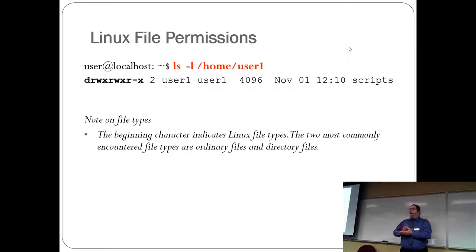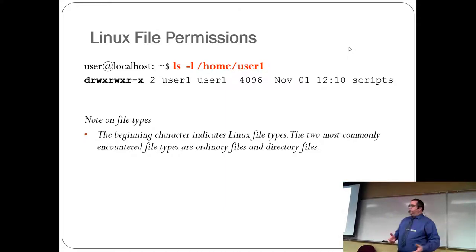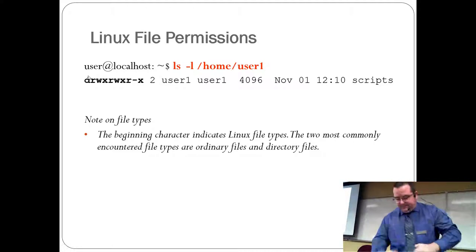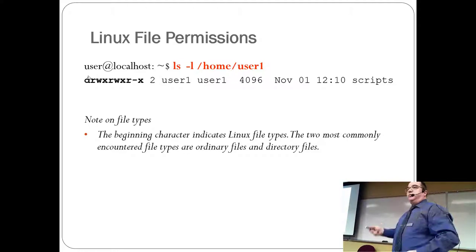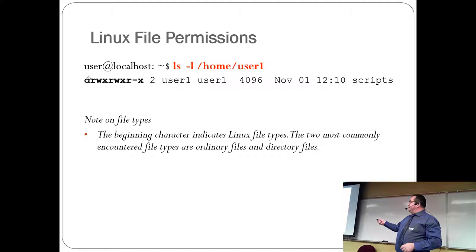When you do an ls -l, you'll notice the very first thing is a block of letters. For example: drwxrwxr followed by other information. The very first set of letters is the permission block. The very first character indicates what kind of file it is — 'd' means directory. If there's nothing there, it's a plain file.